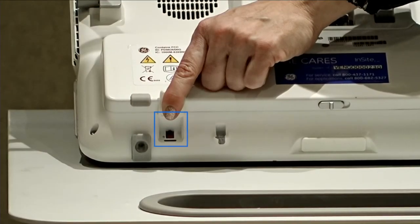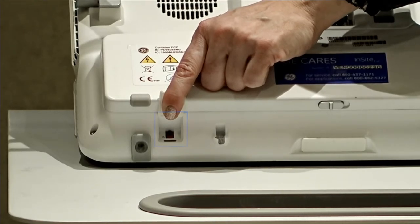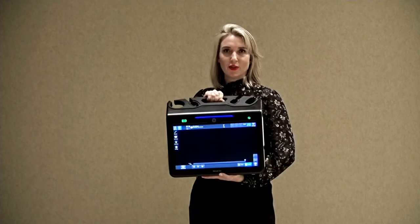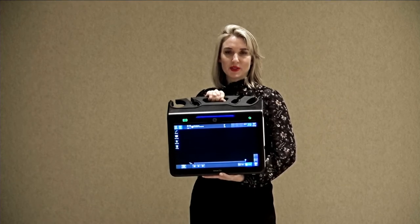When transporting your system, always turn off the circuit breaker to save the life of the battery. The Venue Go can also be placed in a cradle on a boom in the trauma bay or in a procedure room.